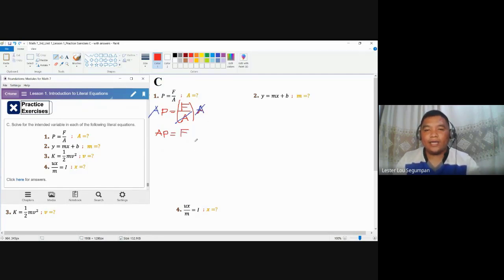The coefficient A disappears on your right-hand side but will appear on your left-hand side because you multiplied both sides by the same expression. This becomes AP equals F. This is the time you could now divide both sides by P, not F, so that A will be retained here. So this equals A equals F over P, not the P over F we tried earlier. This is the result for number one.